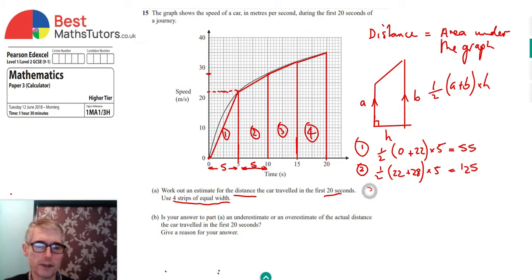We'll repeat for the third trapezium there. So again, it's a half. We've got this one, which is 28 plus the height of this one, which if you project across, is going to be 32 times by 5. If we work that out, that works out to be 150.